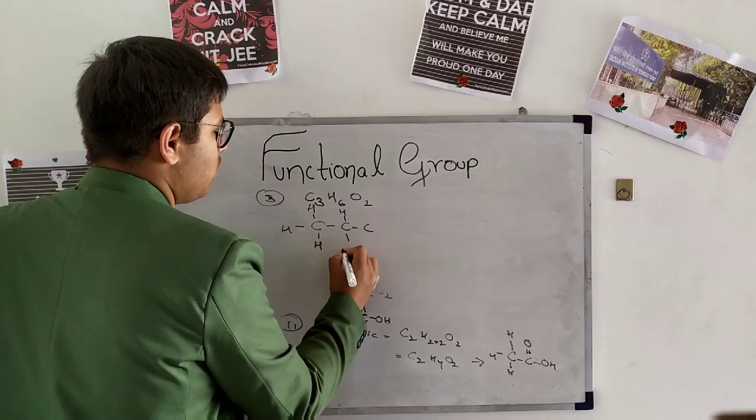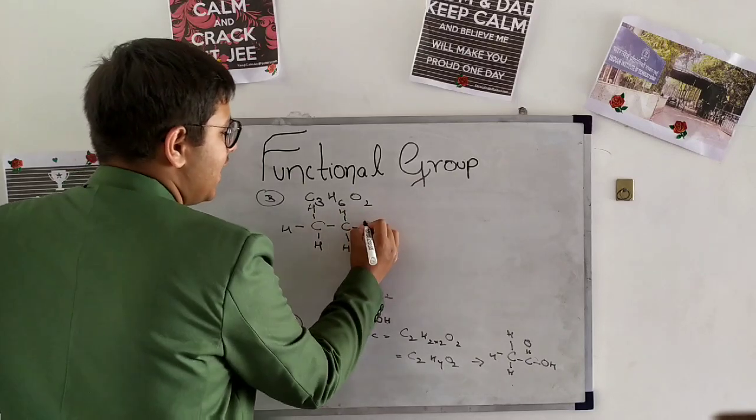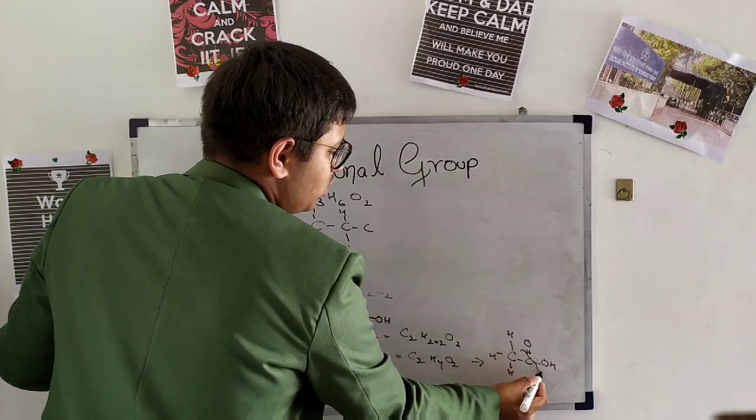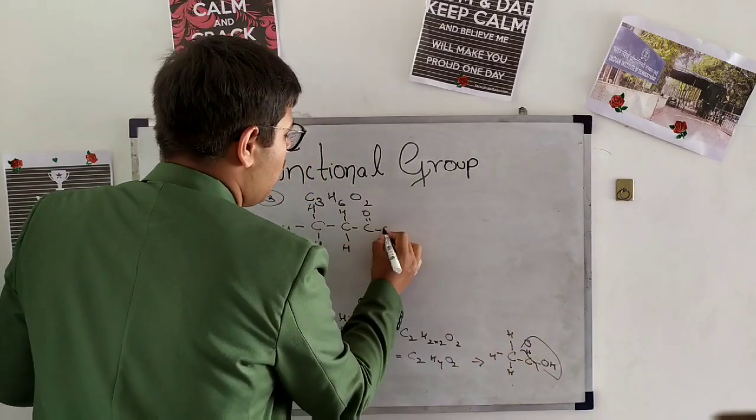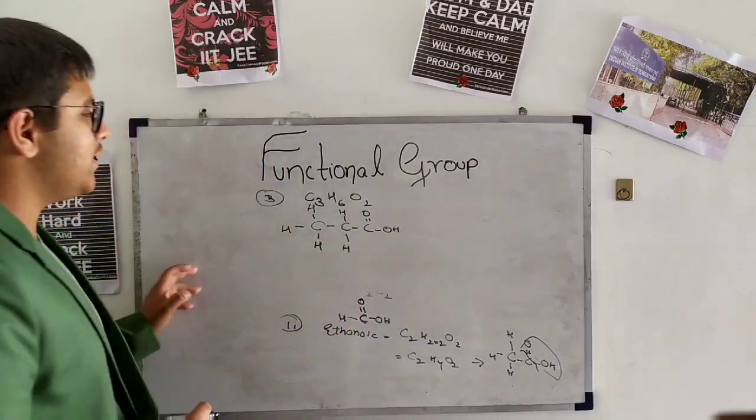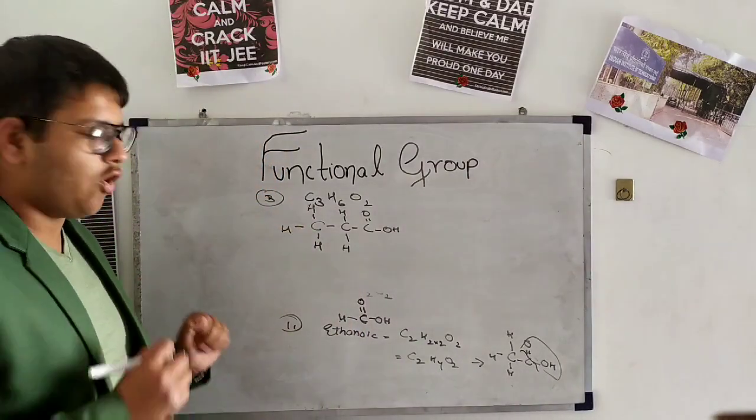As its tetravalency is completed, let us move to other carbon. Now here also we have to put H only. Here at the last carbon we have to do this: double bond O at upper side and OH at its side. So it is the structure form of propanoic acid.